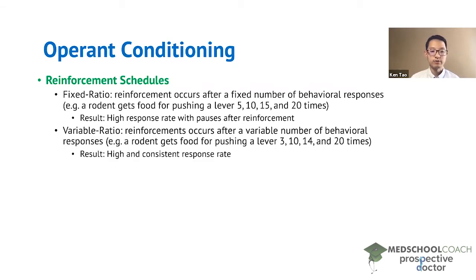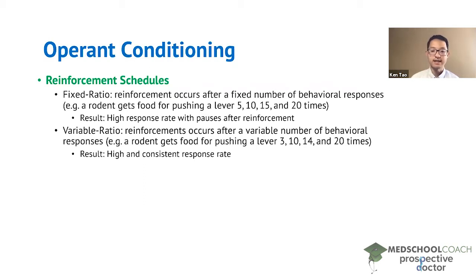Next, we have variable ratio. This is a form of reinforcement where reinforcements are given after a variable number of behavioral responses. The rodent again pushes a lever for the reward of food, but it's not given consistently after a set number of lever presses. Maybe they'll get a reward after the 3rd lever press, the 10th, the 14th, and the 20th. So over 20 lever presses they also got four rewards, but when they get the reward is variable — sometimes after 3 presses, sometimes after 7, 4, or 6.